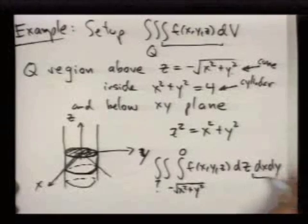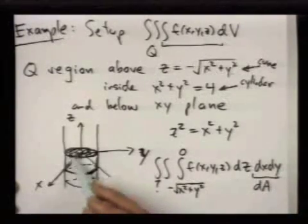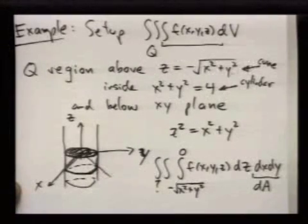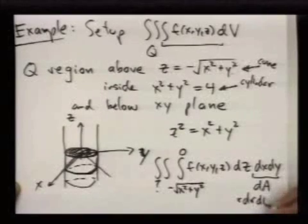So this we could think of as dA over this disk, which in polar coordinates would be r dr dθ.